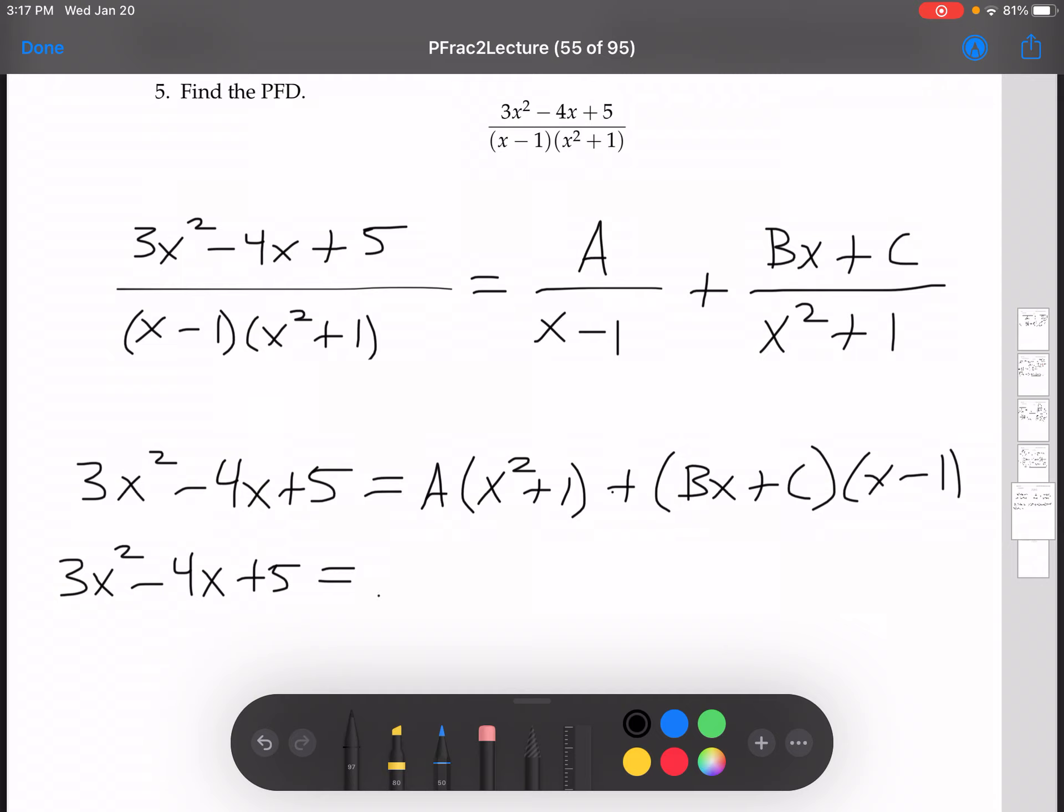Alright, now distributing. Ax squared plus a. And now foiling here. Let's see, we've got bx squared minus bx plus cx minus c.